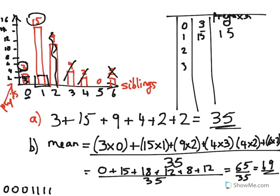Let me explain the cancellation method once more, a bit slower. I cancel the two zeros on the left with the two sixes on the right. I have one zero left, so I cancel it against one of the fours, leaving one four. I cancel that four against one of the ones, then cancel the four threes against four of the fifteen ones. Taking fifteen minus one minus four minus nine equals fifteen minus fourteen, which equals one — one number left, and it's a one.